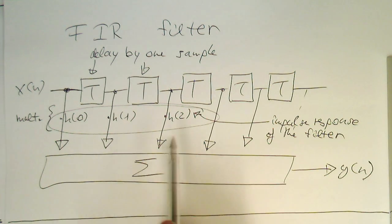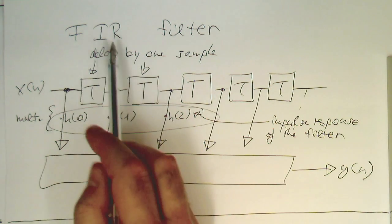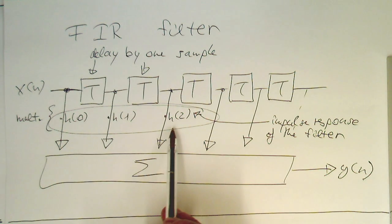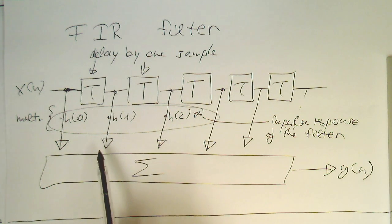So this means that in order to implement an FIR filter, we just need to know the sampled impulse response of our filter. And then with this, we are directly able to generate a simple FIR filter.